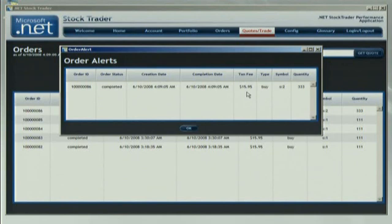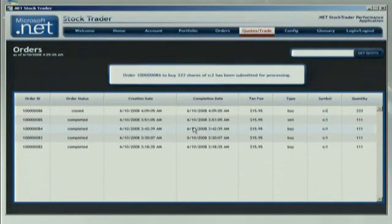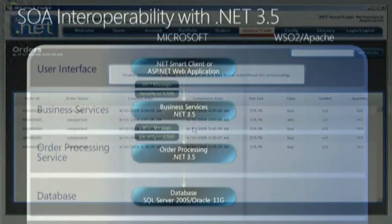We can see we got the order alert that the order processing service has indeed placed that order, and we'll see that in our portfolio. To recap what we've seen so far: the all-.NET implementation of this composite SOA application — the Windows Presentation client, the middle-tier business services, talking to the order processor.